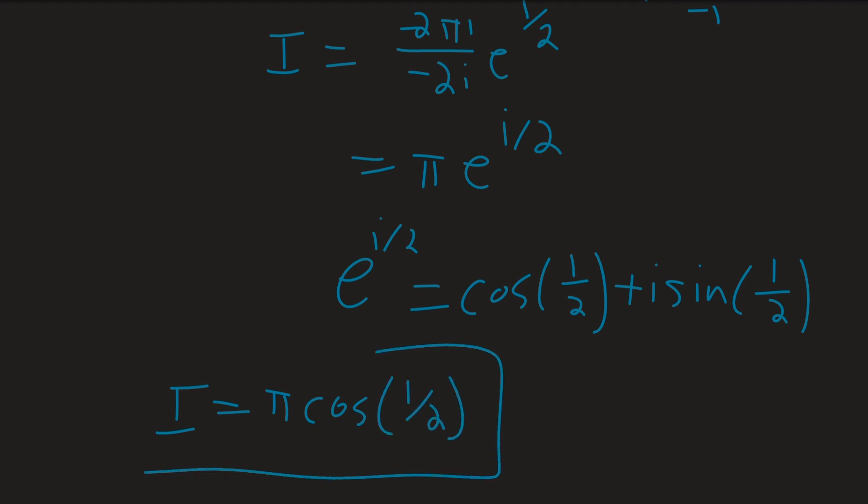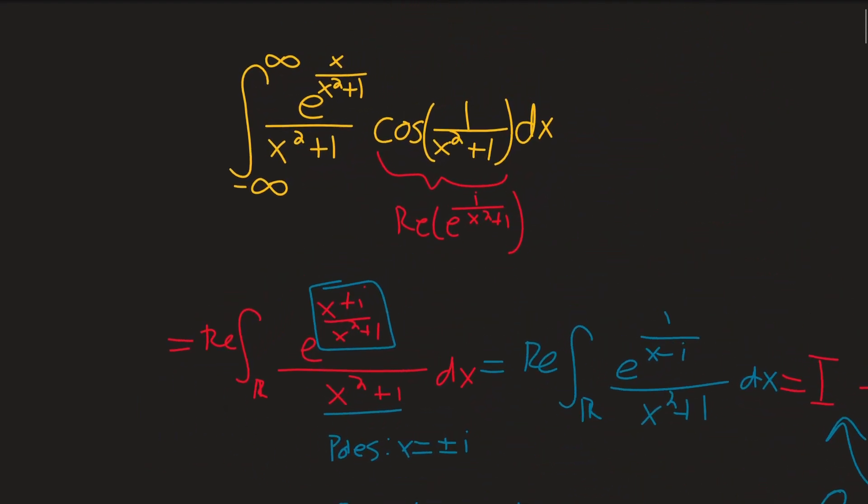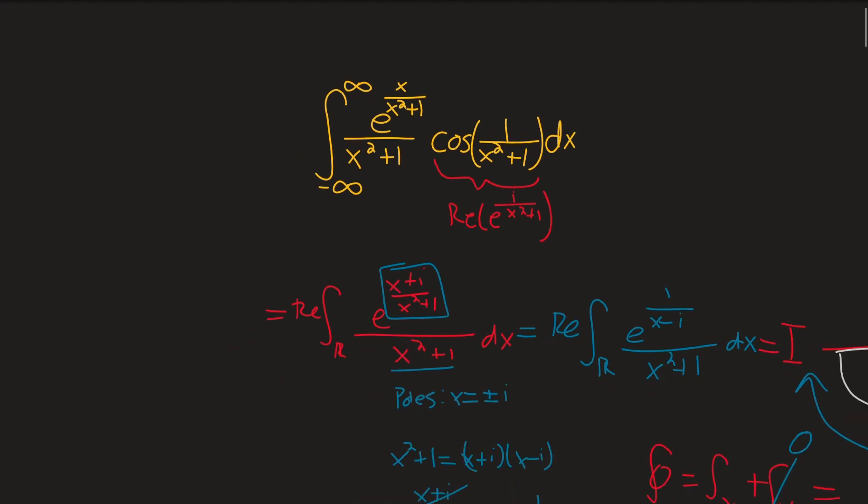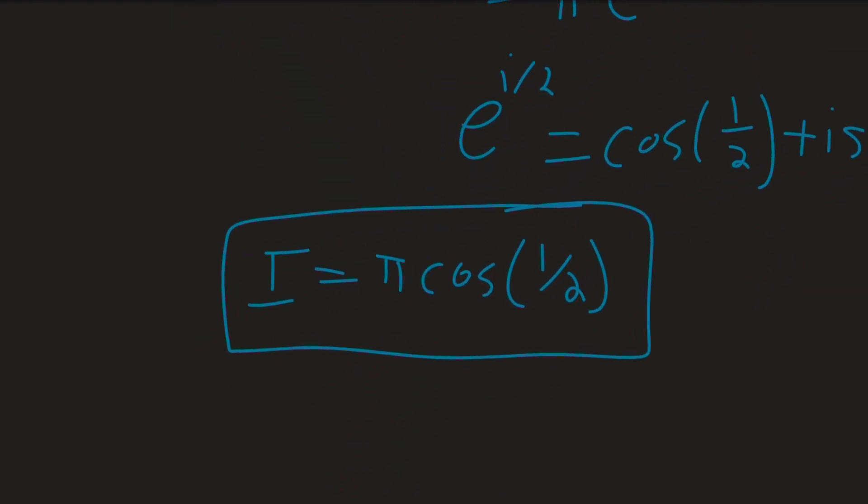And that right there is our answer. It also should be noted that you can find the same integral, but with sine, actually. Because, I mean, notice we used e right here. So, if you were to take the imaginary part of this integral, you'd get the same thing, but with just π times sine of 1/2. And you'd still get a real number and everything. So yeah, just two kind of similar integrals that can be evaluated this way.